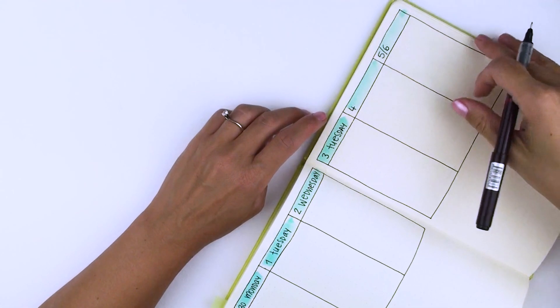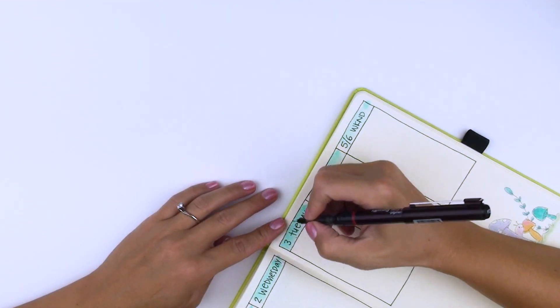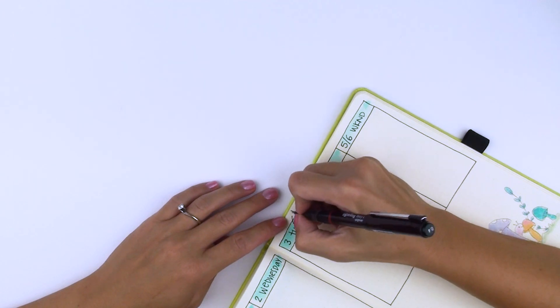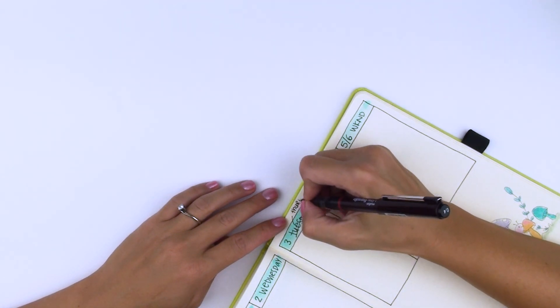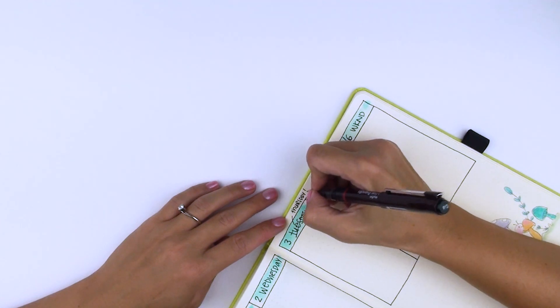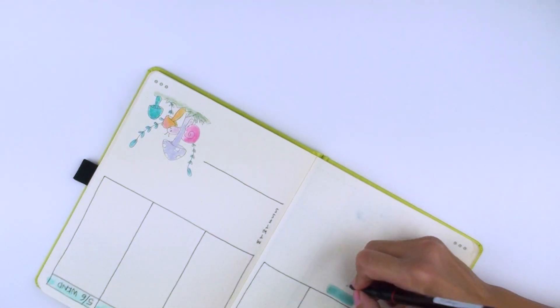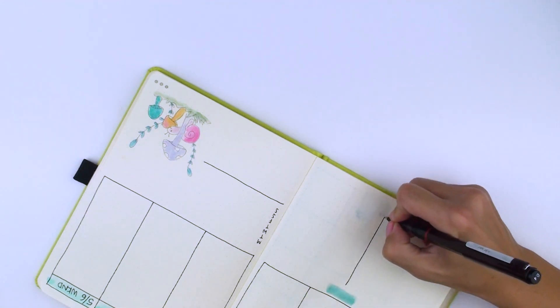As you can see, I made a mistake with the days. In order to fix it, I just tracked through it and added the right day on top. I remember in my first year that I've started using my bullet journal, I would have been devastated with this mishap. However, nowadays it doesn't bother me that much.